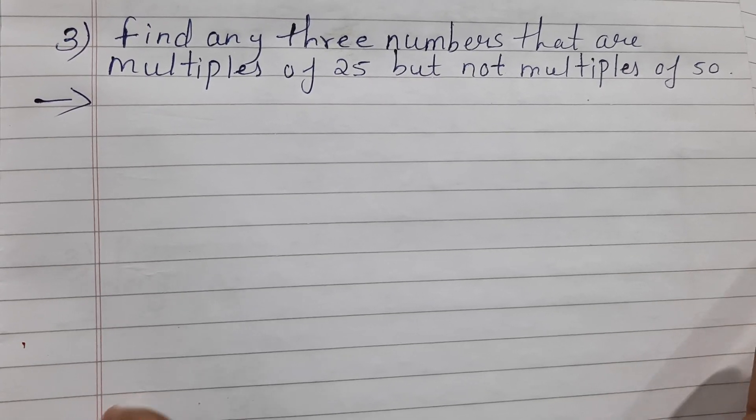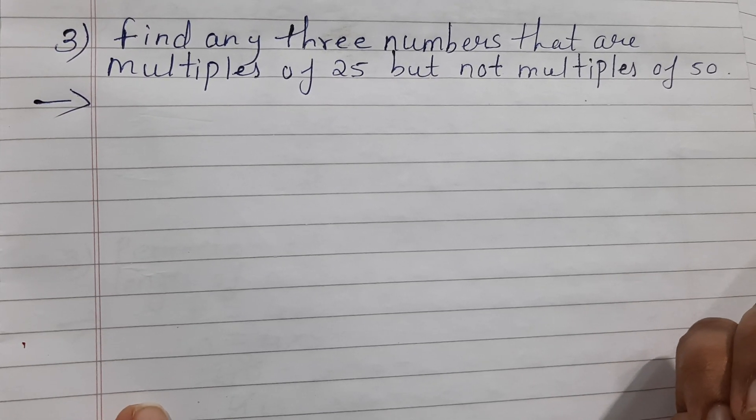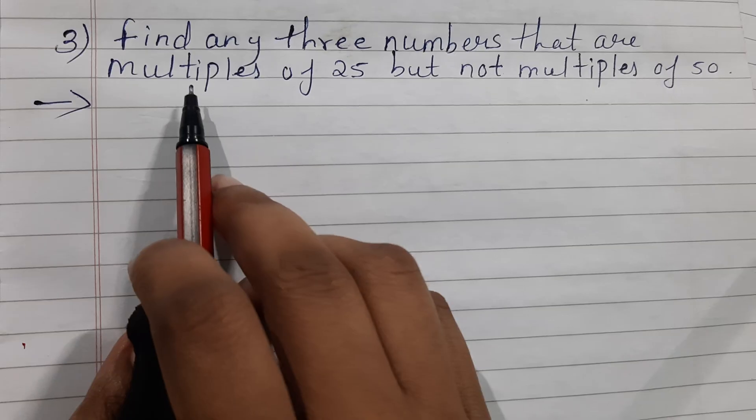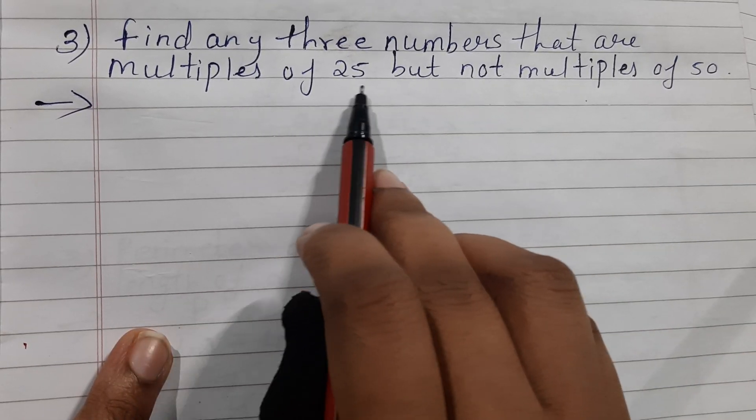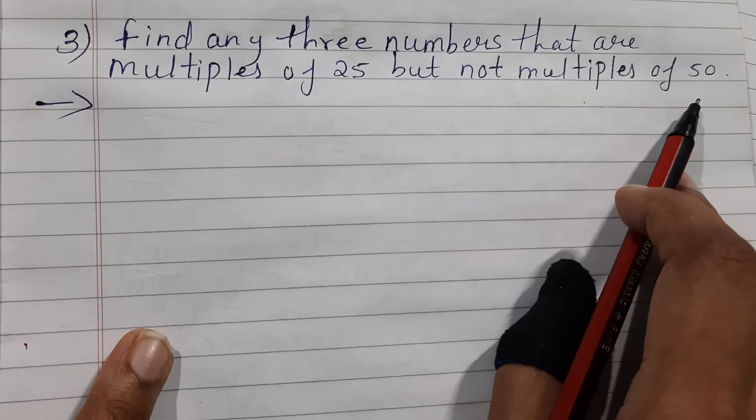Welcome to today's class of mathematics. Today's question is taken from class 6 mathematics. The question is: find any 3 numbers that are multiples of 25 but not multiples of 50.